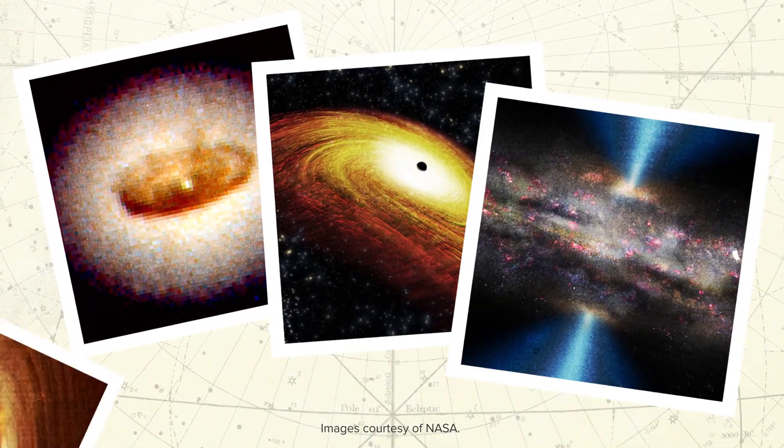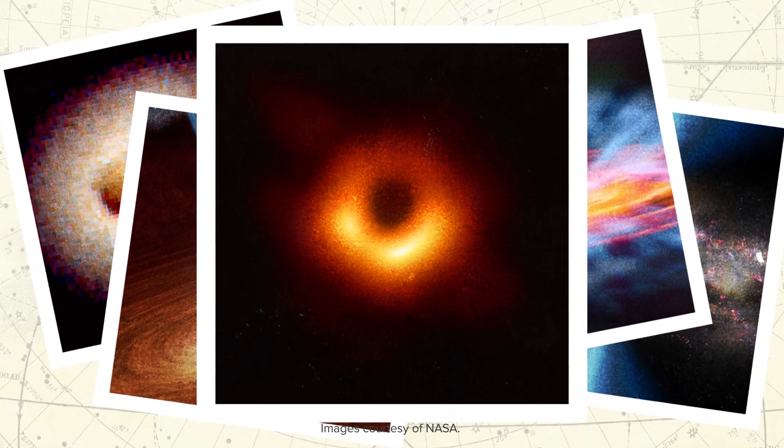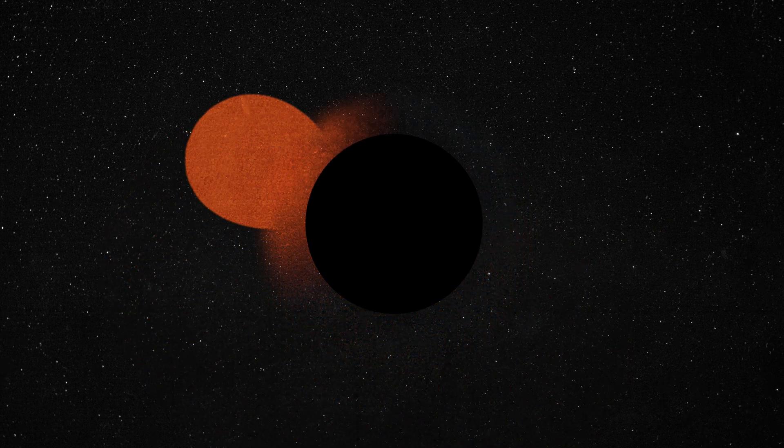Black holes are kind of a big deal, most recently highlighted by this photo of a supermassive black hole taken in 2019. Black holes are exceptionally hard to find because they don't emit any light. To pinpoint where they are, you look at how nearby stars interact with them and measure the x-ray activity.